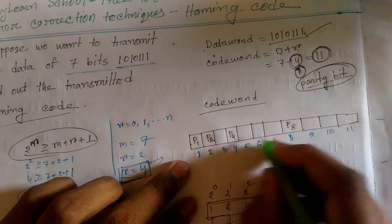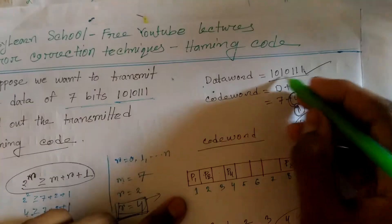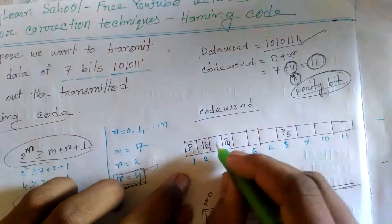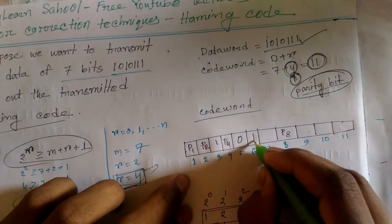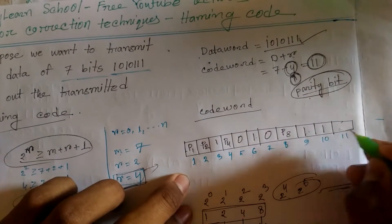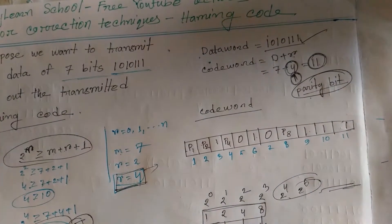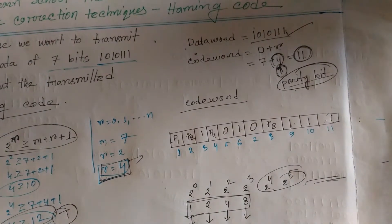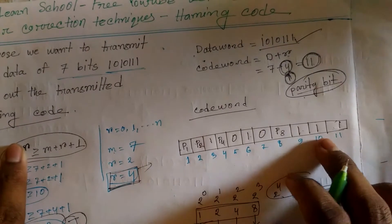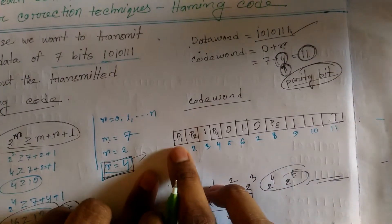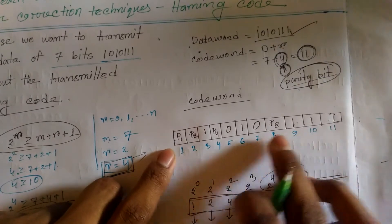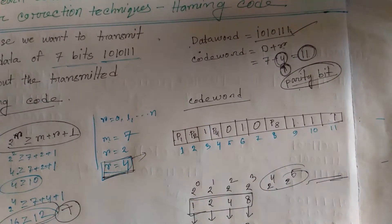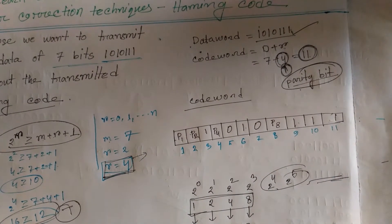We will have a data word. The data word is 1, 0, 1, 1, 1, 1. This is the code word. We will have a code word — a Hamming code word. We will have P1, P2, P4, P8. Matching P8, the main code word is called P8.